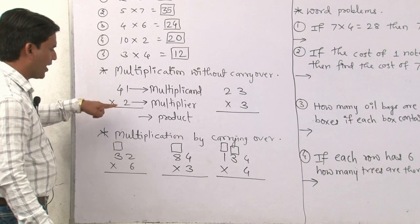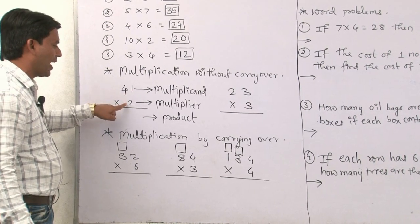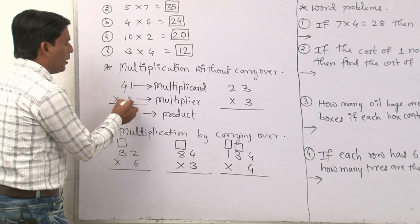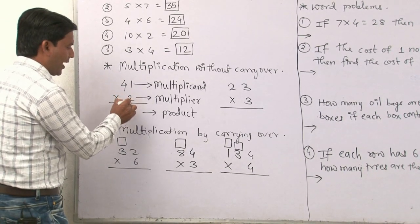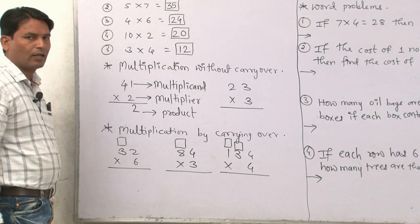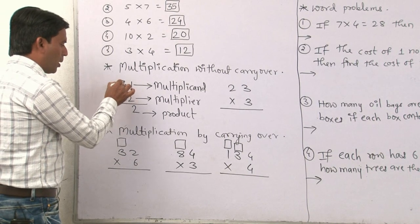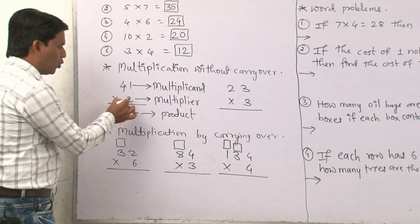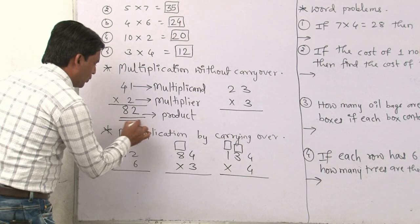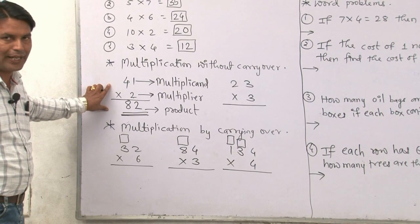Here we will find the product of 41 multiplied by 2. First of all we will multiply 1 by 2: 2 ones are 2. After that we will multiply 4 by 2: 2 fours are 8. So 82 is the product of this sum.